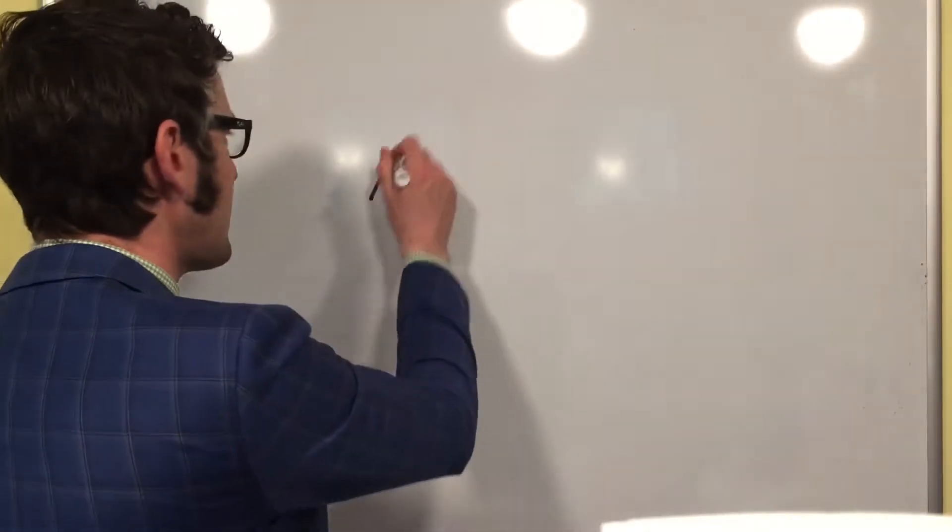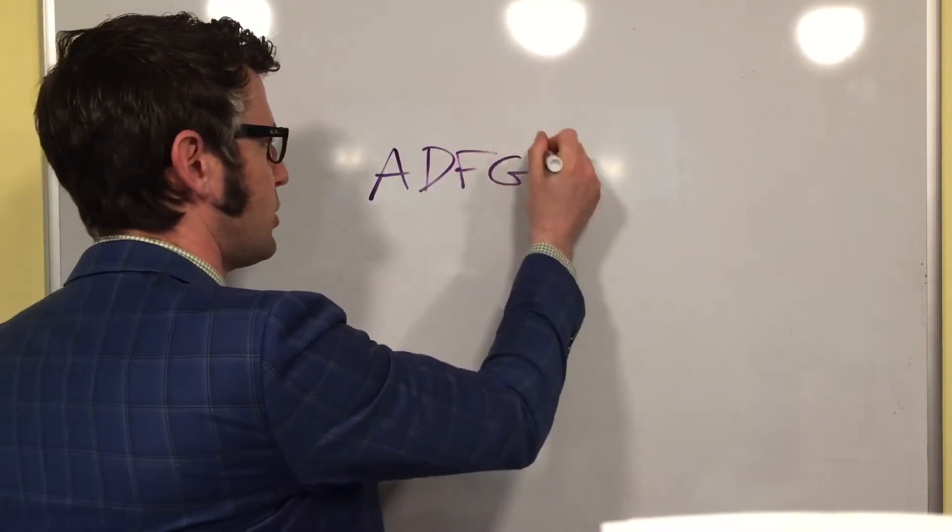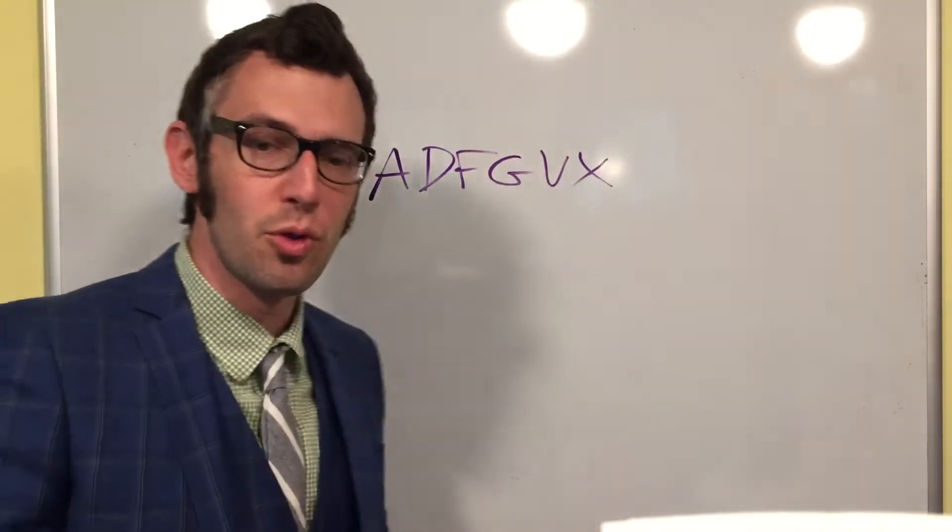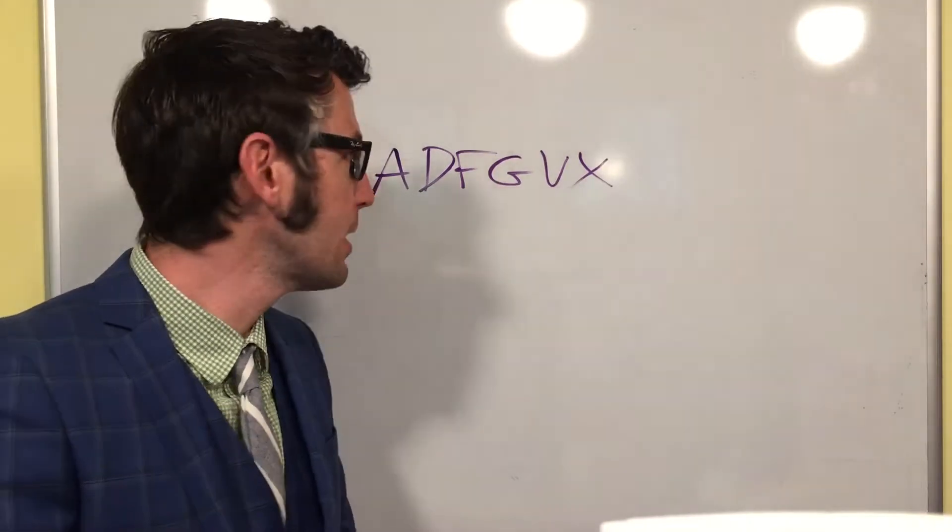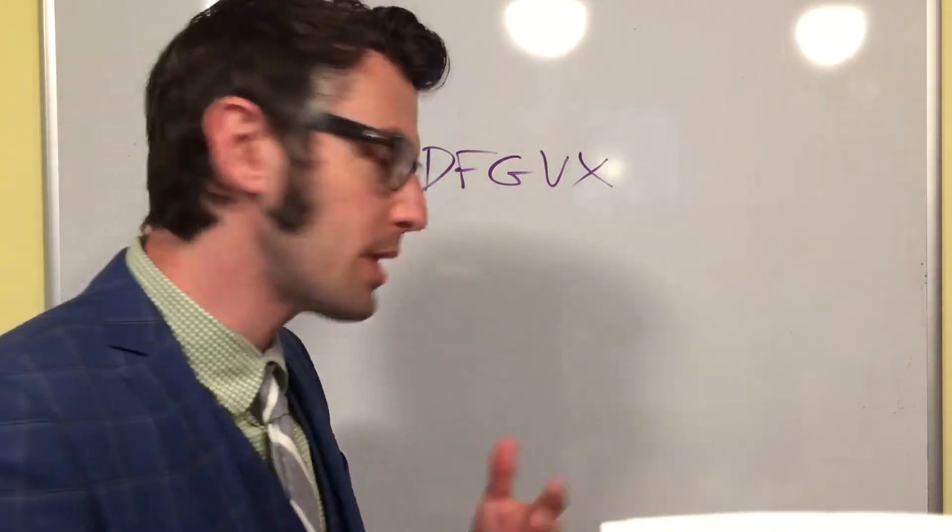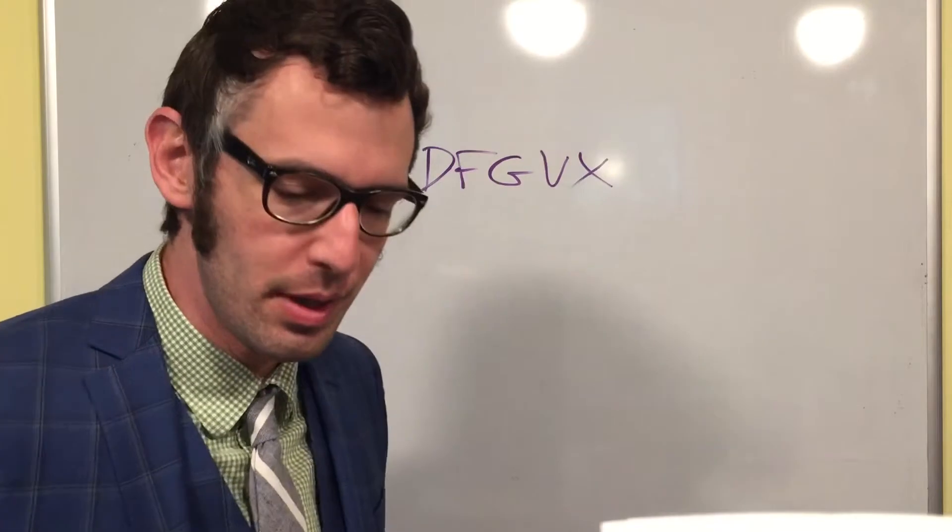Hi everybody, Mr. Gottlieb here with the cryptology video for you. Today I want to talk about the ADFGVX cipher. This was used during World War I, as you'll see in the reading, and we'll talk about how to break this later, but right now I want to talk about how to encipher with it.